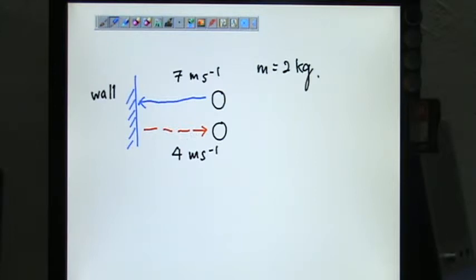7 meter per second to the wall, but there's a problem here because 7 meter per second is going to the left, indicated by the blue arrow, but there's also the ball bouncing back at opposite direction, which is 4 meter per second opposite to 7 meter per second previously.